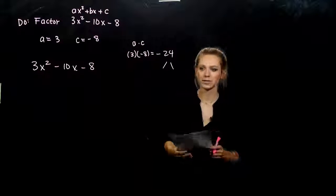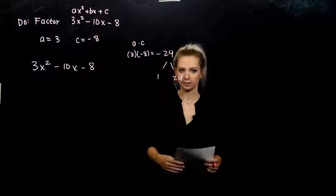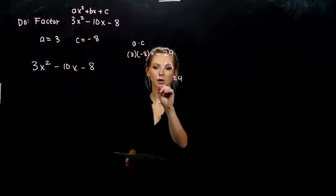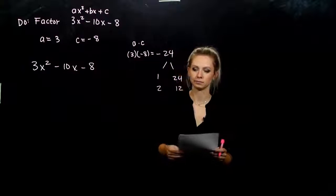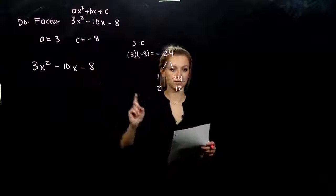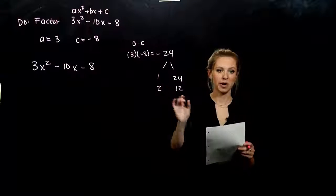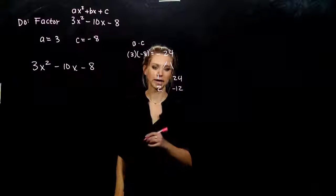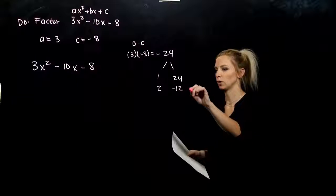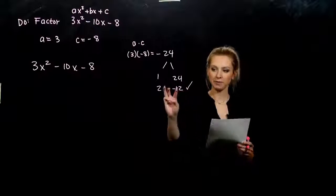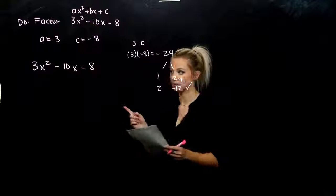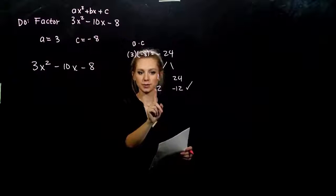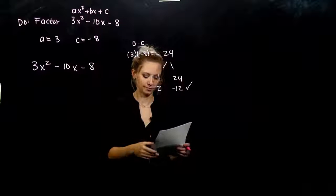What are we looking at? If I take 1 and 24, too big — not going to get me to negative 10. We need things closer together. How about 2 and 12? We're getting closer there. Some combo will give us negative 10. Which one do we need to be positive, which one negative? The larger one has to be negative, so we need negative 12 and positive 2. That one will work. We found the factors. Now we take negative 10 and rewrite it in terms of positive 2 and negative 12.